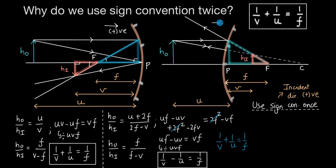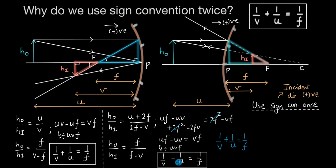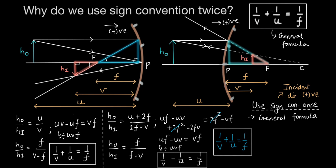For the convex mirror case, the incident direction is again to the right, so everything to the right of pole P is positive and everything on the left is negative. Here V is positive, U is negative, and F is positive. But notice that when U is taken as negative, there is already a negative sign, so it becomes positive. We land at the same equation: 1/V + 1/U = 1/F. That is the benefit of sign convention — we only have to remember one general formula.